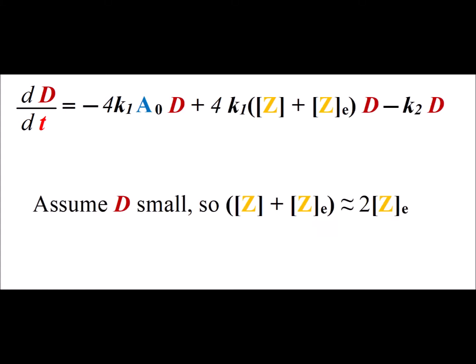In this step, we make use of the fact that we can factor the difference of two squares, a squared minus b squared, as a plus b, a minus b. And we're making use of the fact that if the difference from equilibrium is small, then the concentration of Z is pretty close to the equilibrium concentration. So we can replace Z plus Z equilibrium by two times the equilibrium concentration of Z.